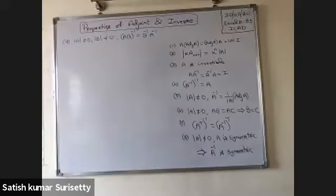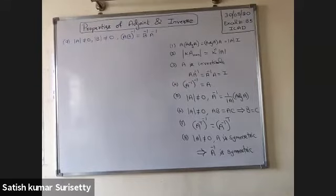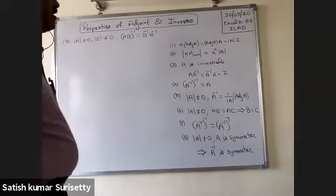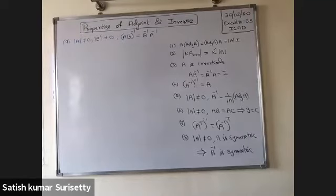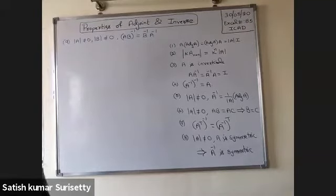Properties of adjoint and inverse: A into adjoint of A equals adjoint of A into A equals determinant of A into I. Second, determinant of k into A equals k to the power of n into determinant of A. If A is invertible, then A into A inverse equals A inverse into A equals I.